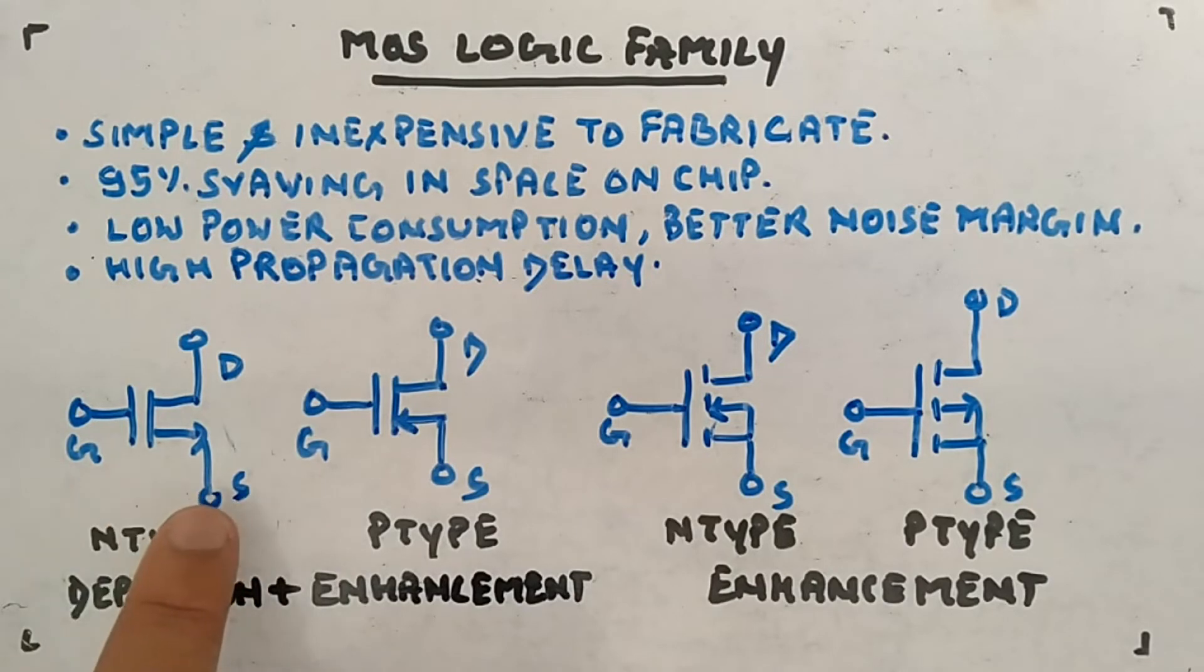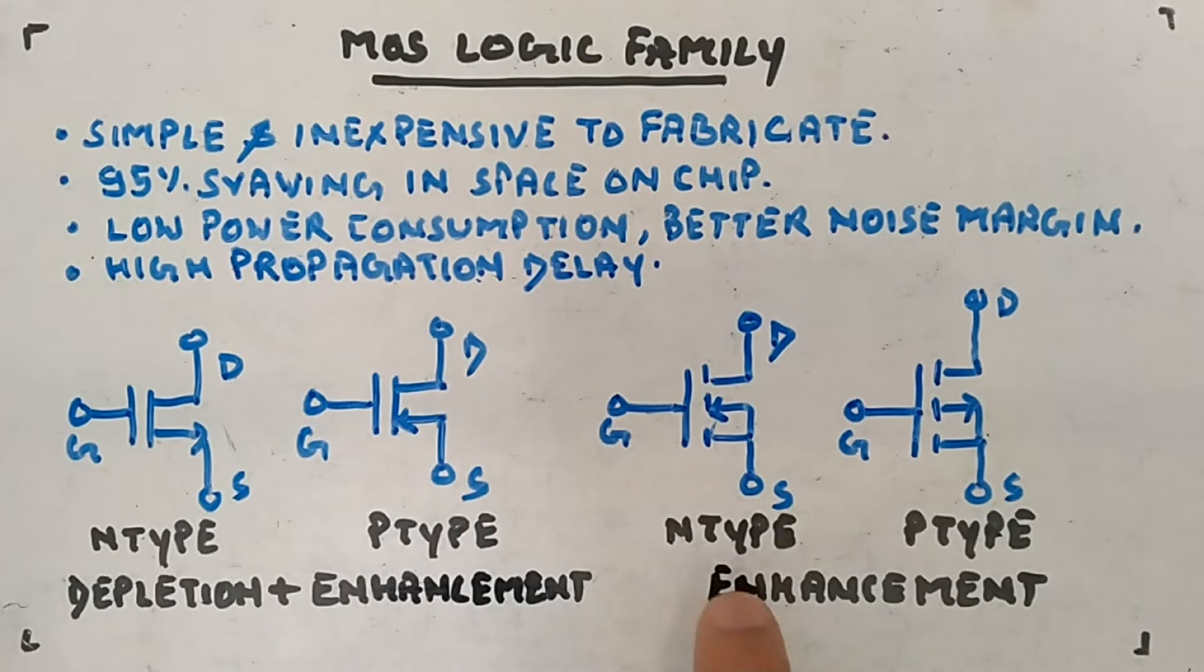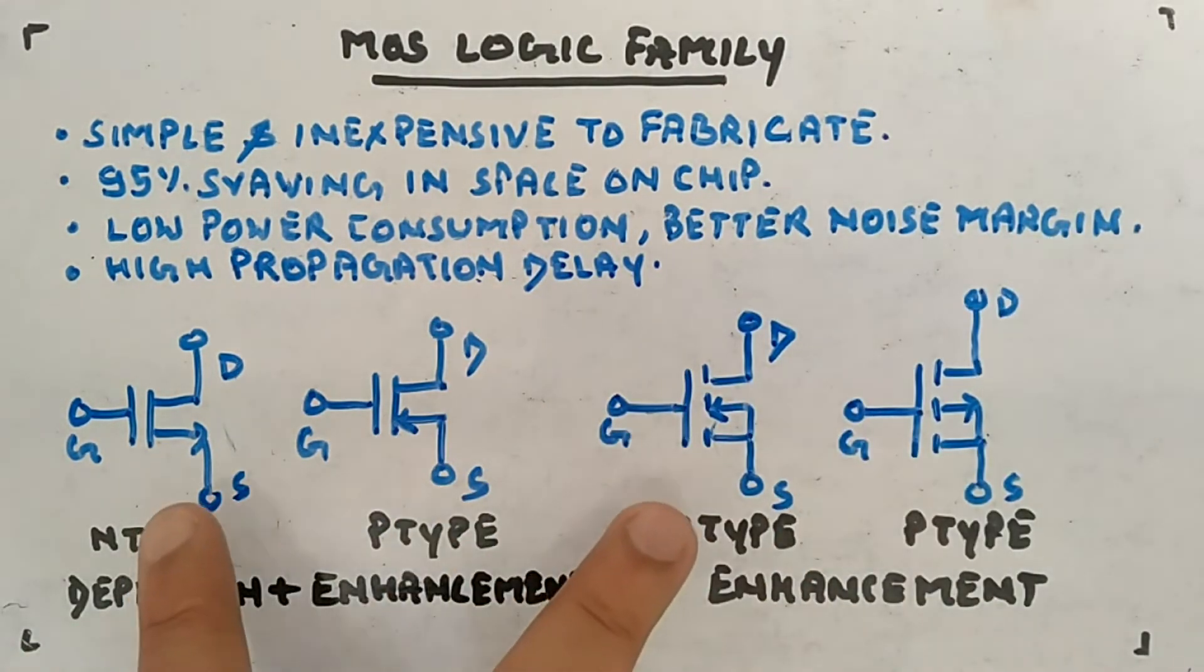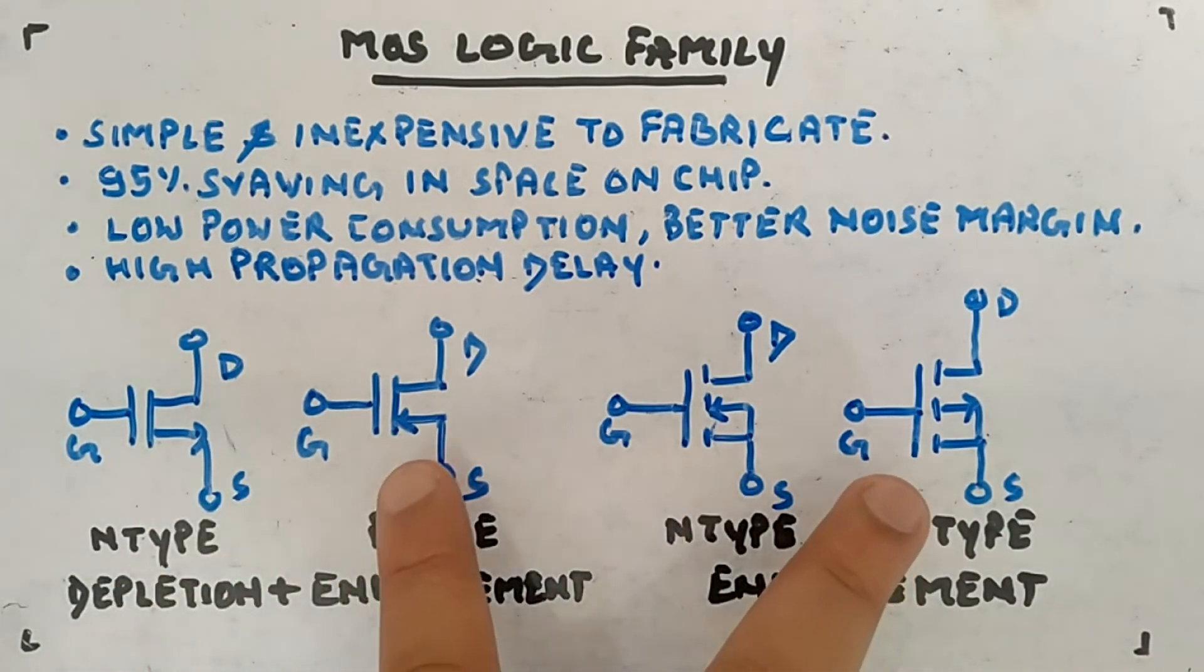But here in enhancement only N-type, you can see the arrow is inside and you have two lines, and then dashed lines are also there. So don't get confused - these are the symbols you have to take care of.